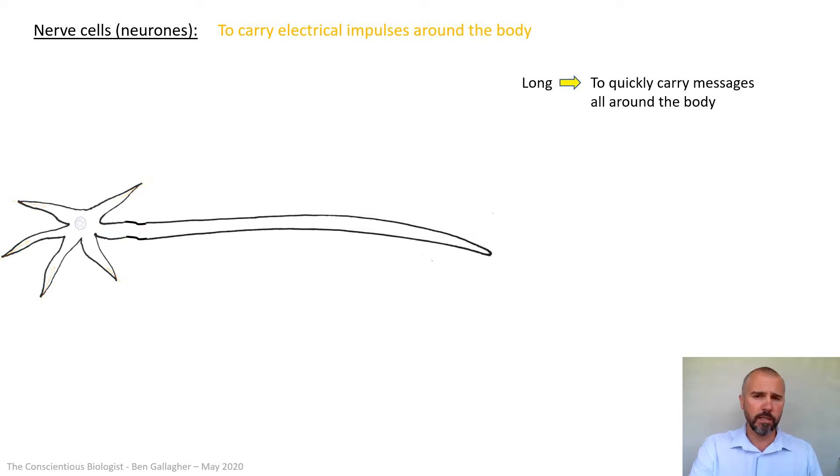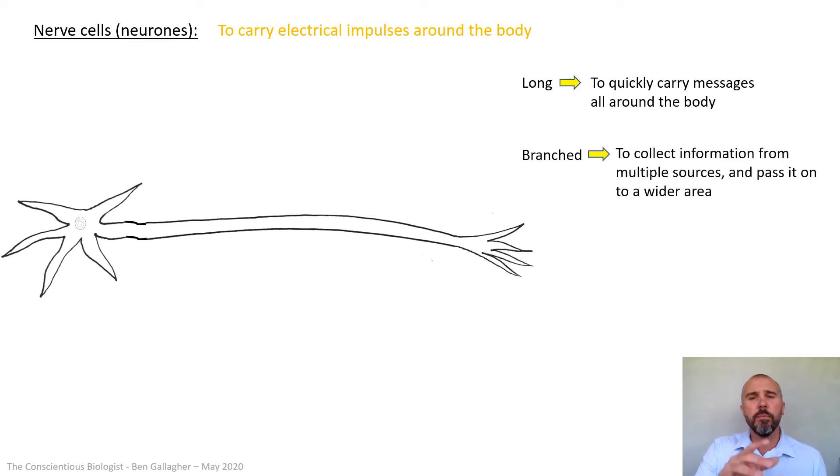But of course if you're going to be branched on one end, it would only be sensible to be branched at the other end as well. Now having those branches on the other end means when the signal comes along, you can then spread that signal back out and deliver a message to lots of places. You're not just taking a signal to one bit of the body, you can branch it out and send it to various places as well. So being highly branched at both ends is really, really useful. Because that means at the far end, you can collect information from multiple sources. But at the nearer end, you can pass it on to a wider area.